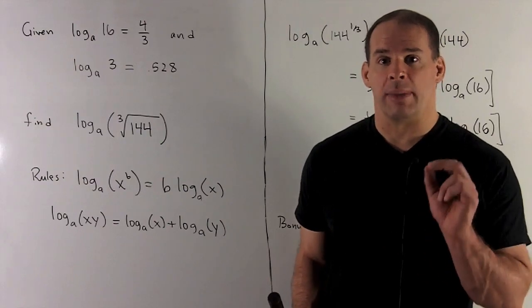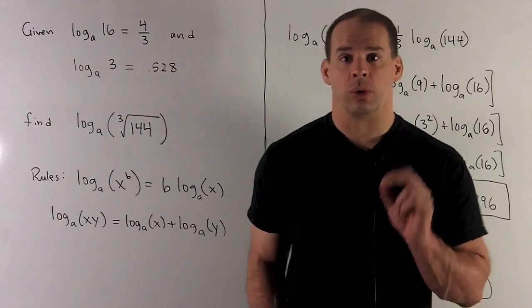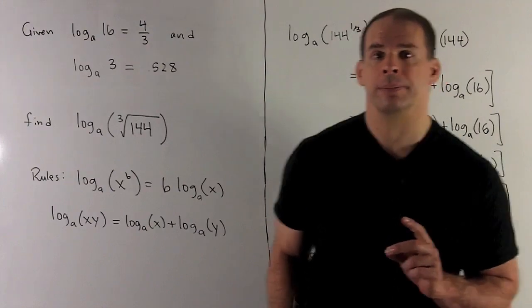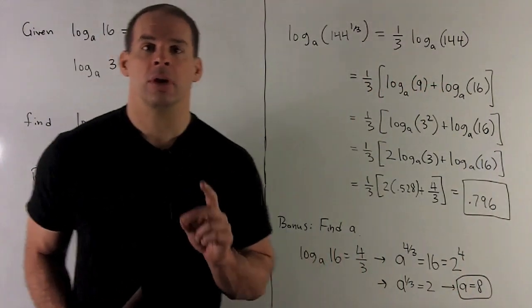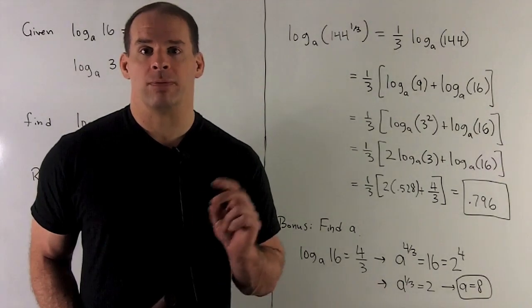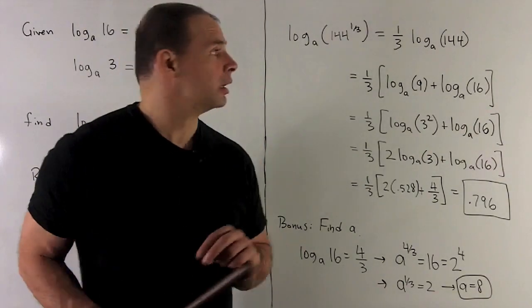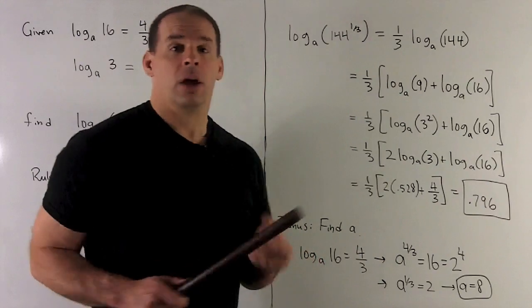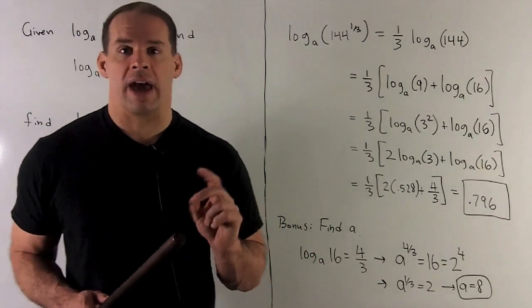All right, let's see how we make this work for the cube root of 144. Now, first thing I'll do is write cube root of 144 is 144 to the 1 3rd. Then, I'm allowed to take that exponent, move it out in front.